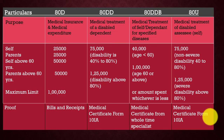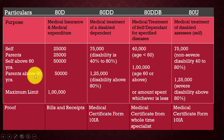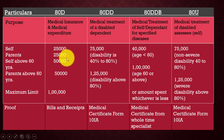In Section 80D, we claim insurance premium and medical expenditure. If you are paying for self and you are below 60 years of age, the deduction is ₹25,000. If you are paying for self and you are 60 years and above, the deduction is ₹50,000. If you are paying for your parents who are 60 years and above, the deduction is ₹50,000.